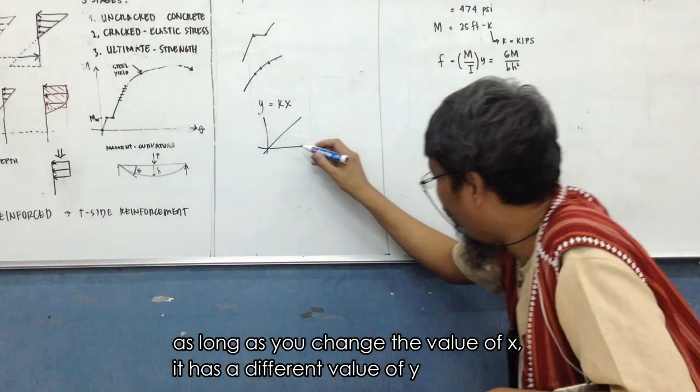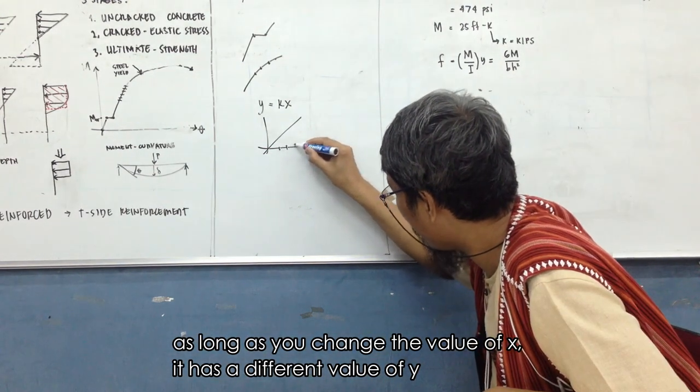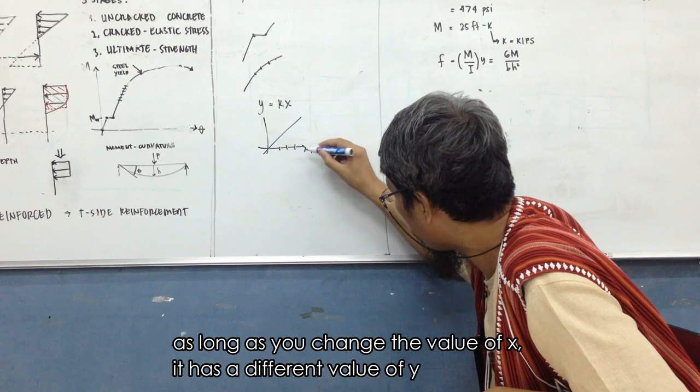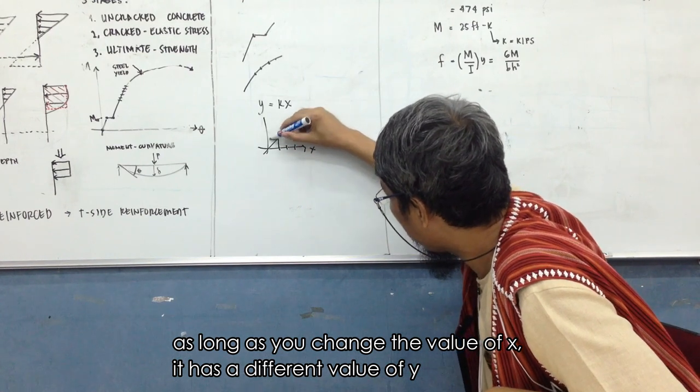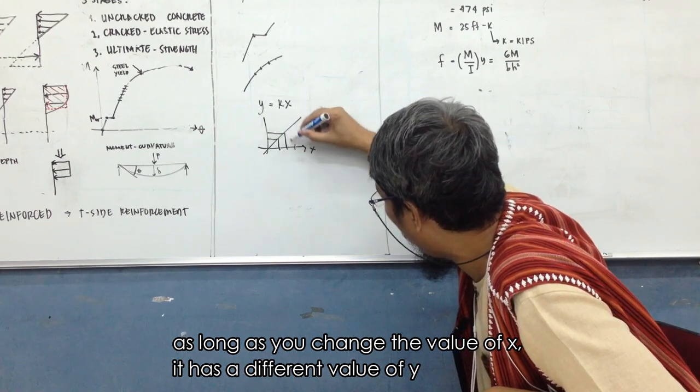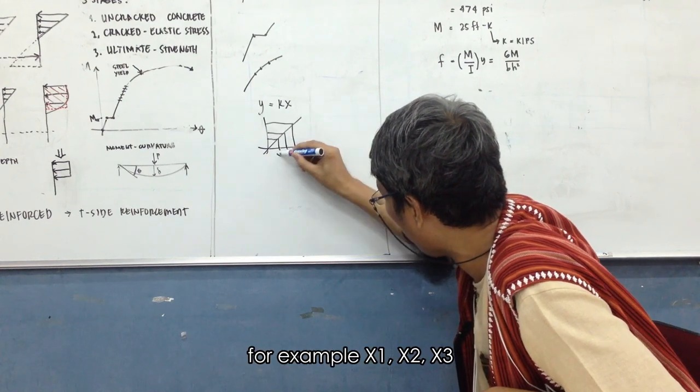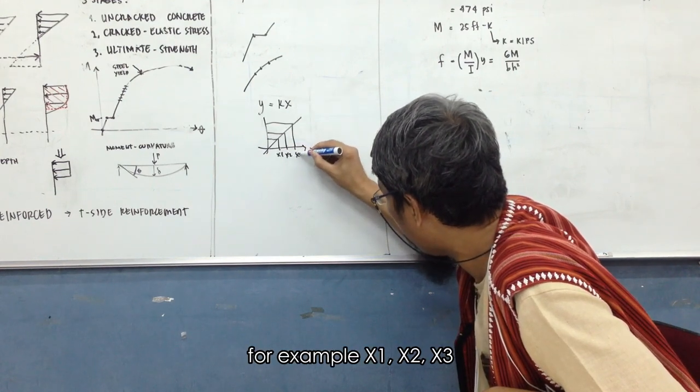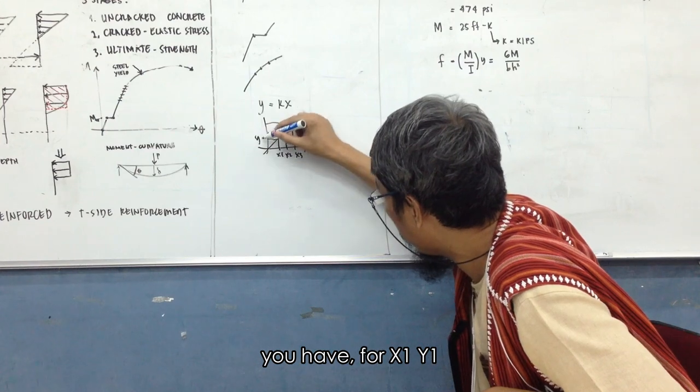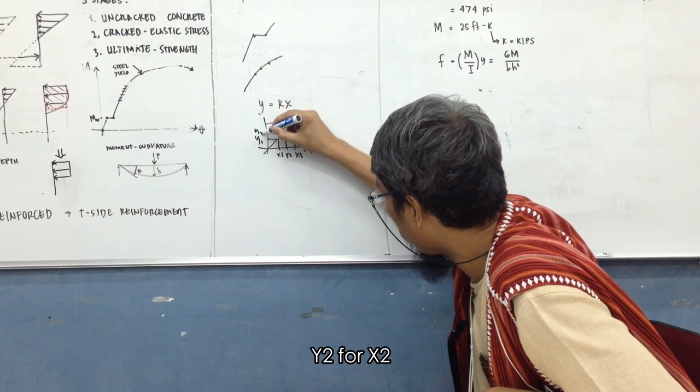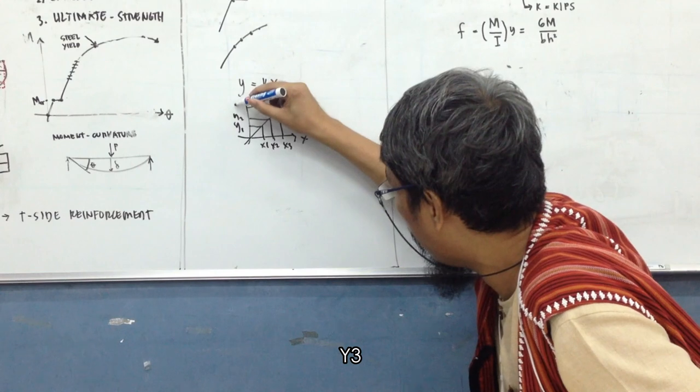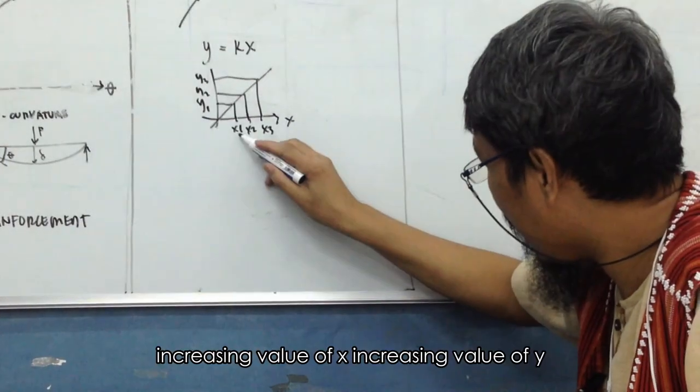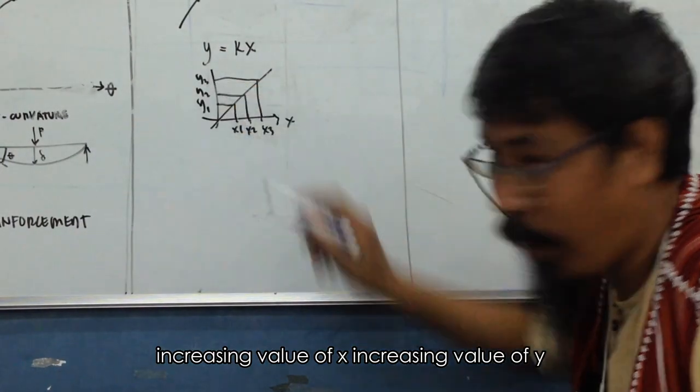As long as you change the value of x, it has a different value of y. For example, x1, x2, x3. You have for x1, y1, y2 for x2, and for x3. Increasing value of x, increasing value of y.